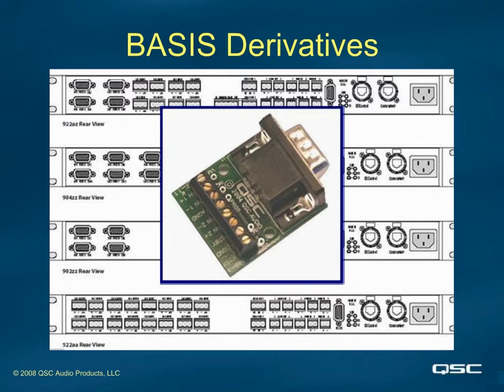For example, if you had three QSC CX amplifiers connected to data ports A, C, and D of the 922AZ, you could use the DDI11 on port B to send audio to an assisted listening system and still have full processing and control of that audio.